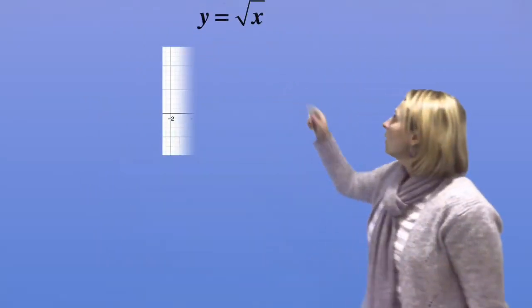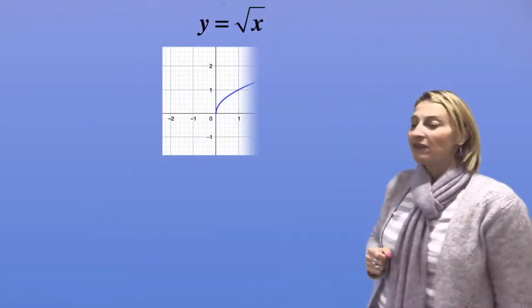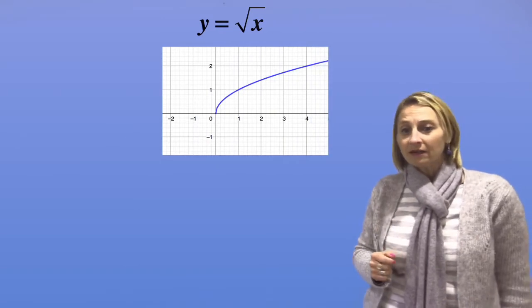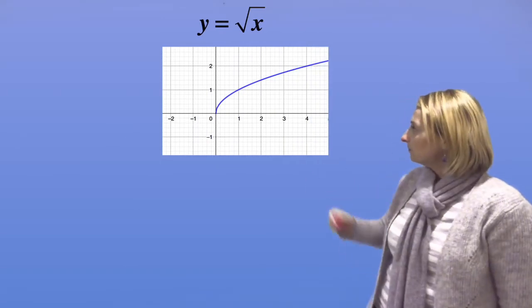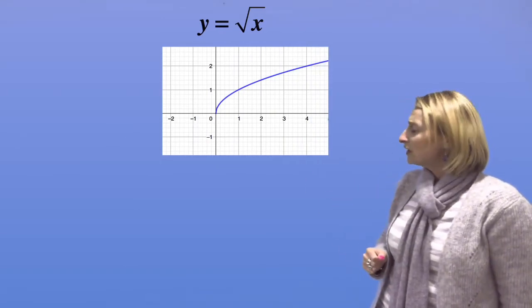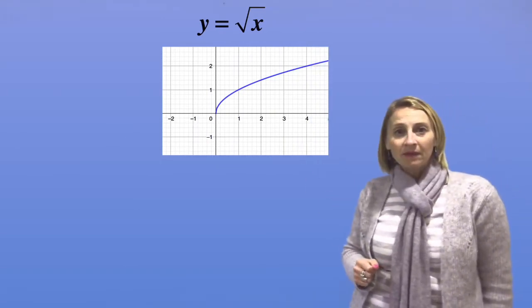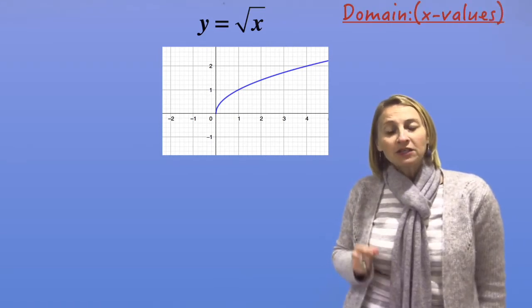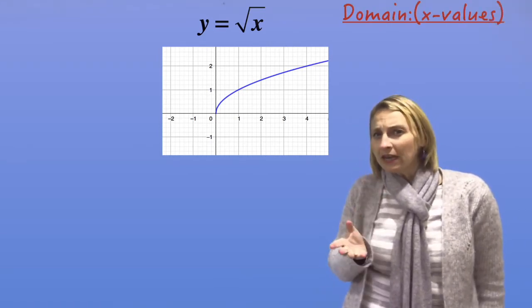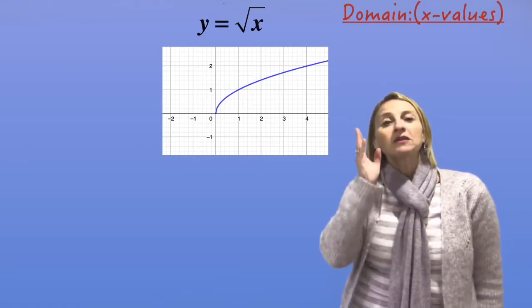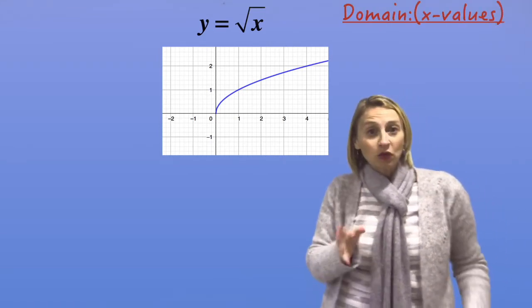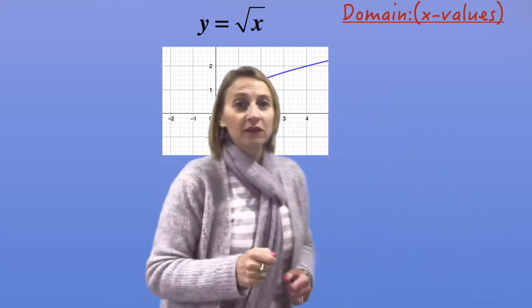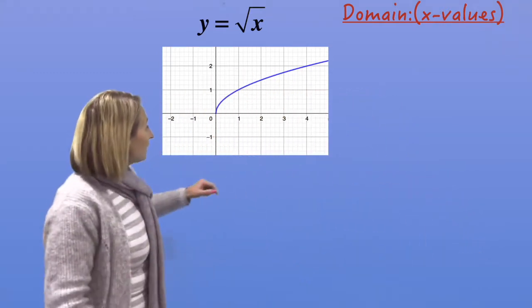Here's another one: y equals the square root of x. You should know what this looks like. Now we want to think about what's the domain — the possible x values. What are the possible x values? Let's take a look.